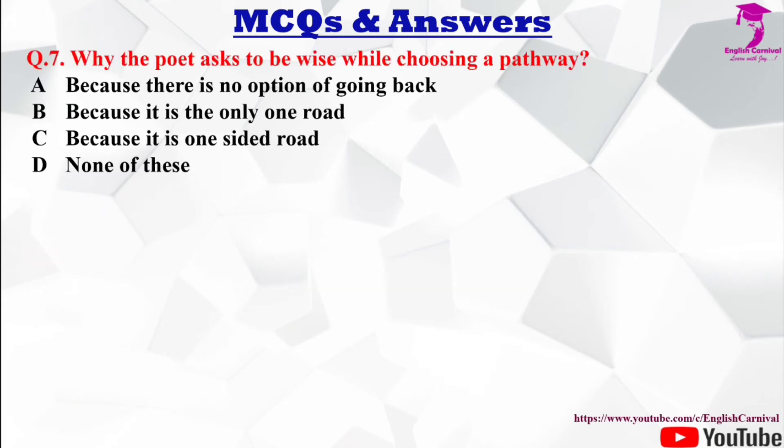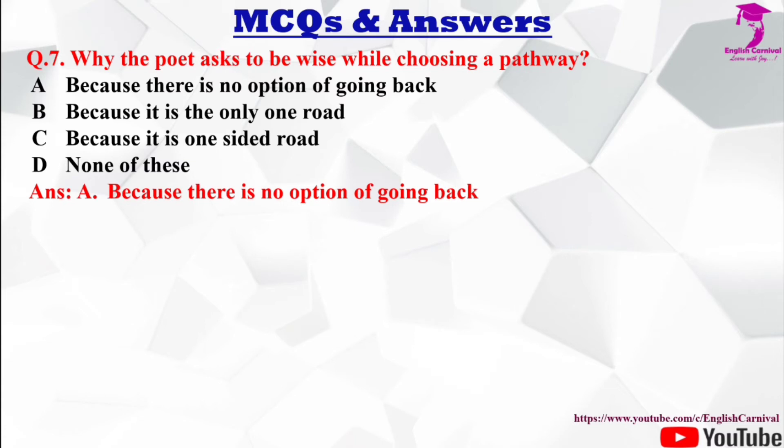Question number 7: Why does the poet ask to be wise while choosing a pathway? Options: A) because there is no option of going back, B) because it is the only one road, C) because it is a one-sided road, D) none of these. The correct answer is A — because there is no option of going back.